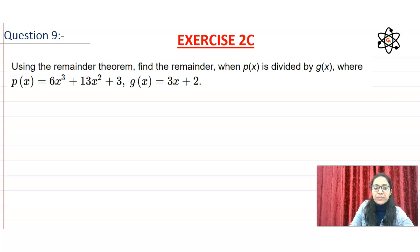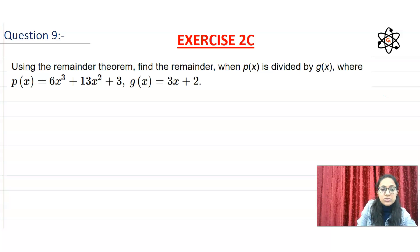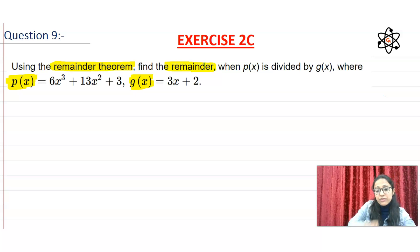Using the remainder theorem, find the remainder when p is divided by g, where p(x) is equal to 6x³ plus 13x² plus 3, and g(x) is equal to 3x plus 2. So understand — here you have p(x) and g(x), and you have to use the remainder theorem.